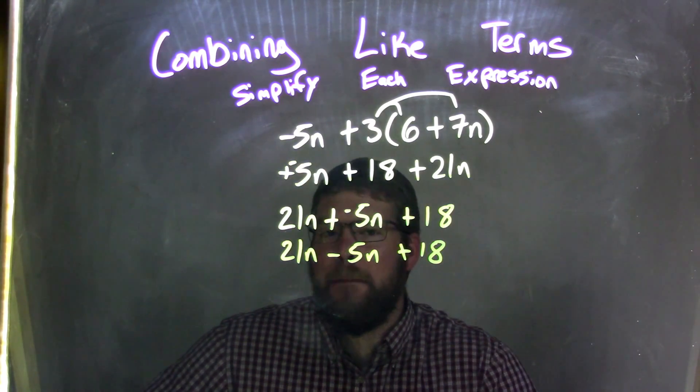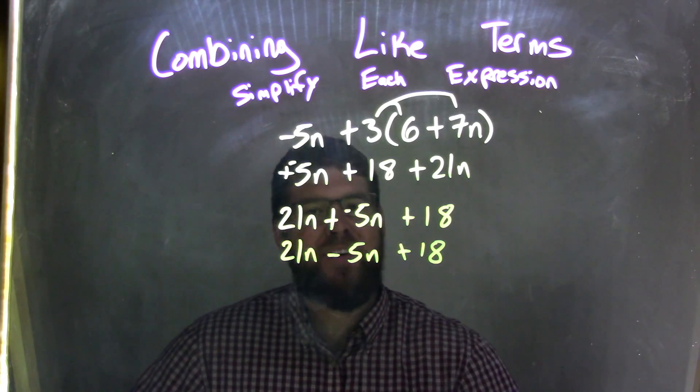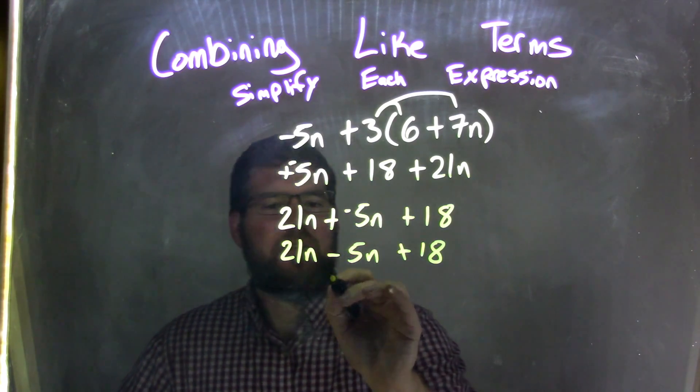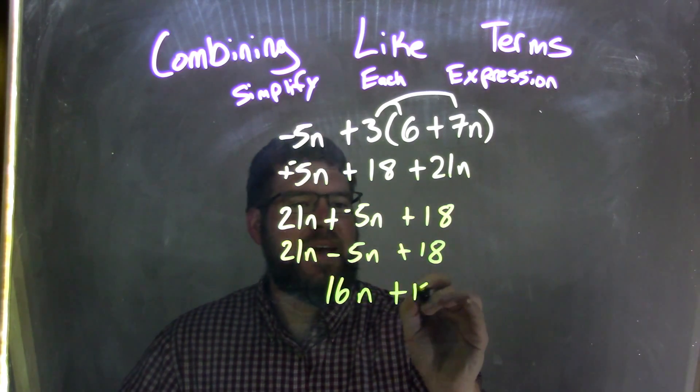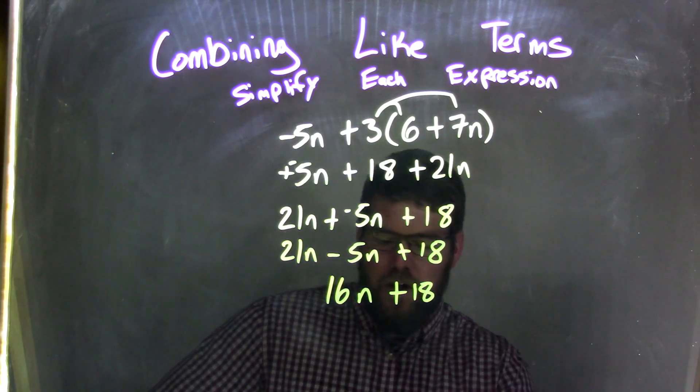And so now it's 21 minus 5. Well, 21 minus 5 is 16. So now we have 16n plus 18, and that is our final answer.